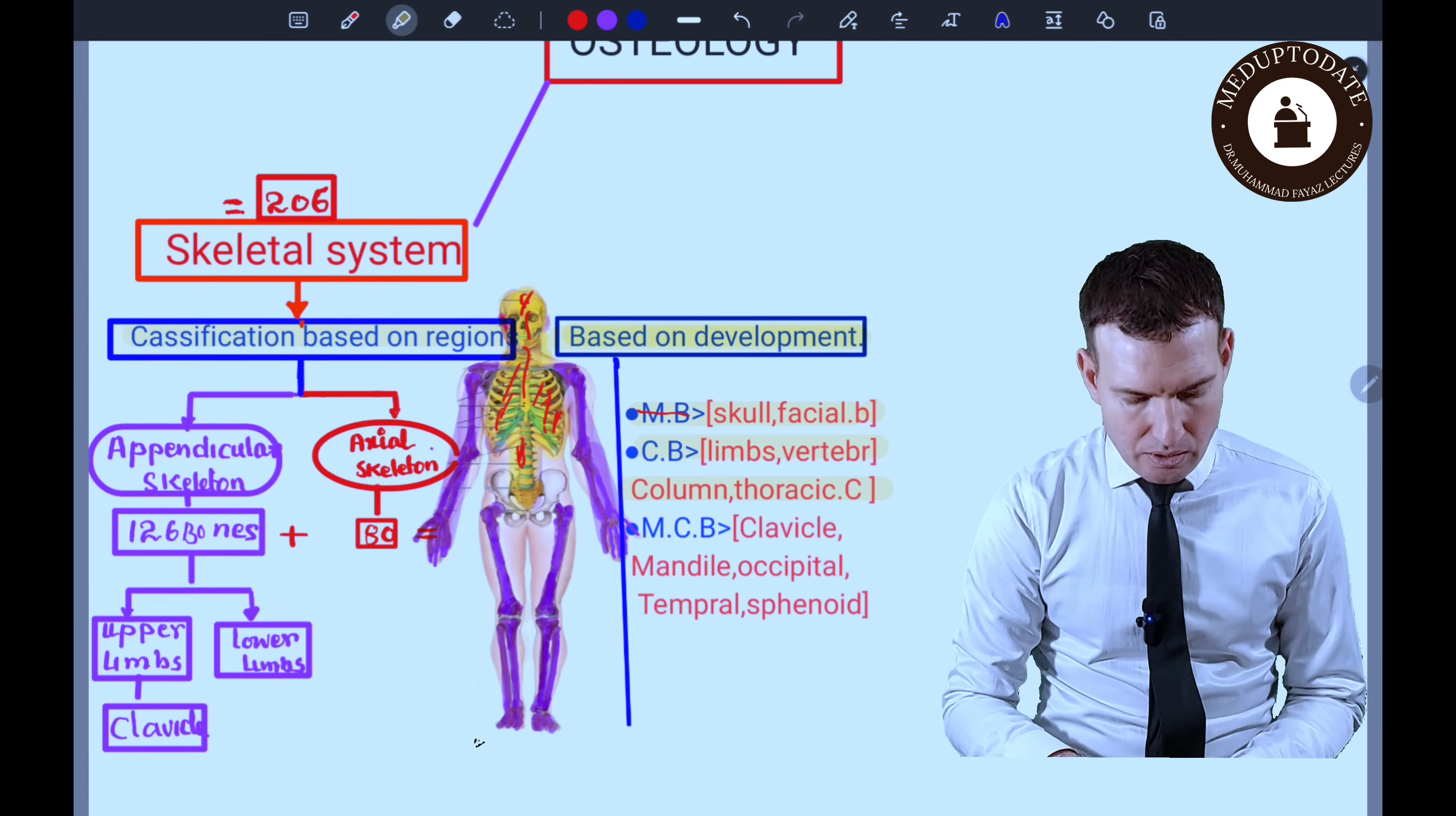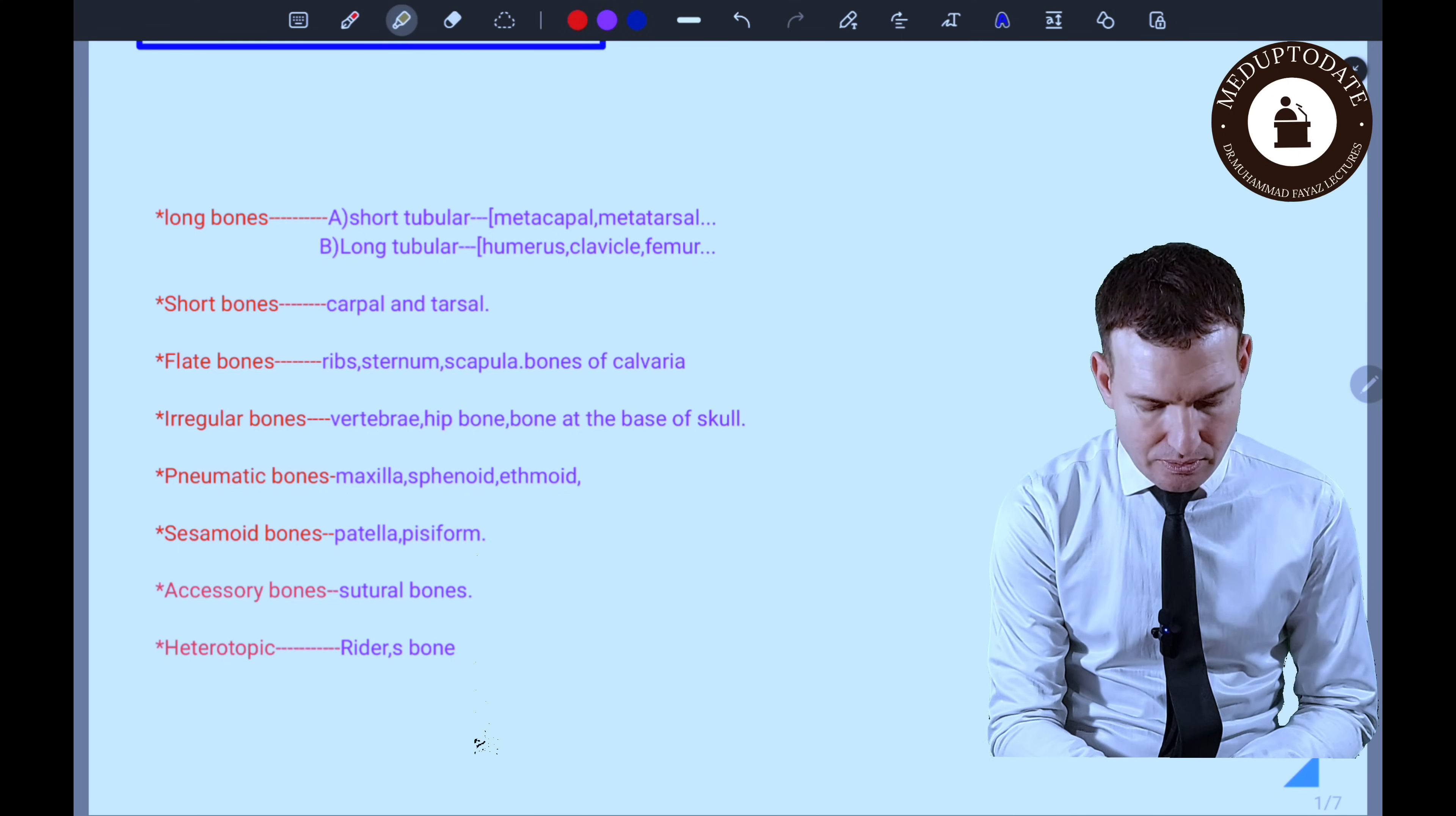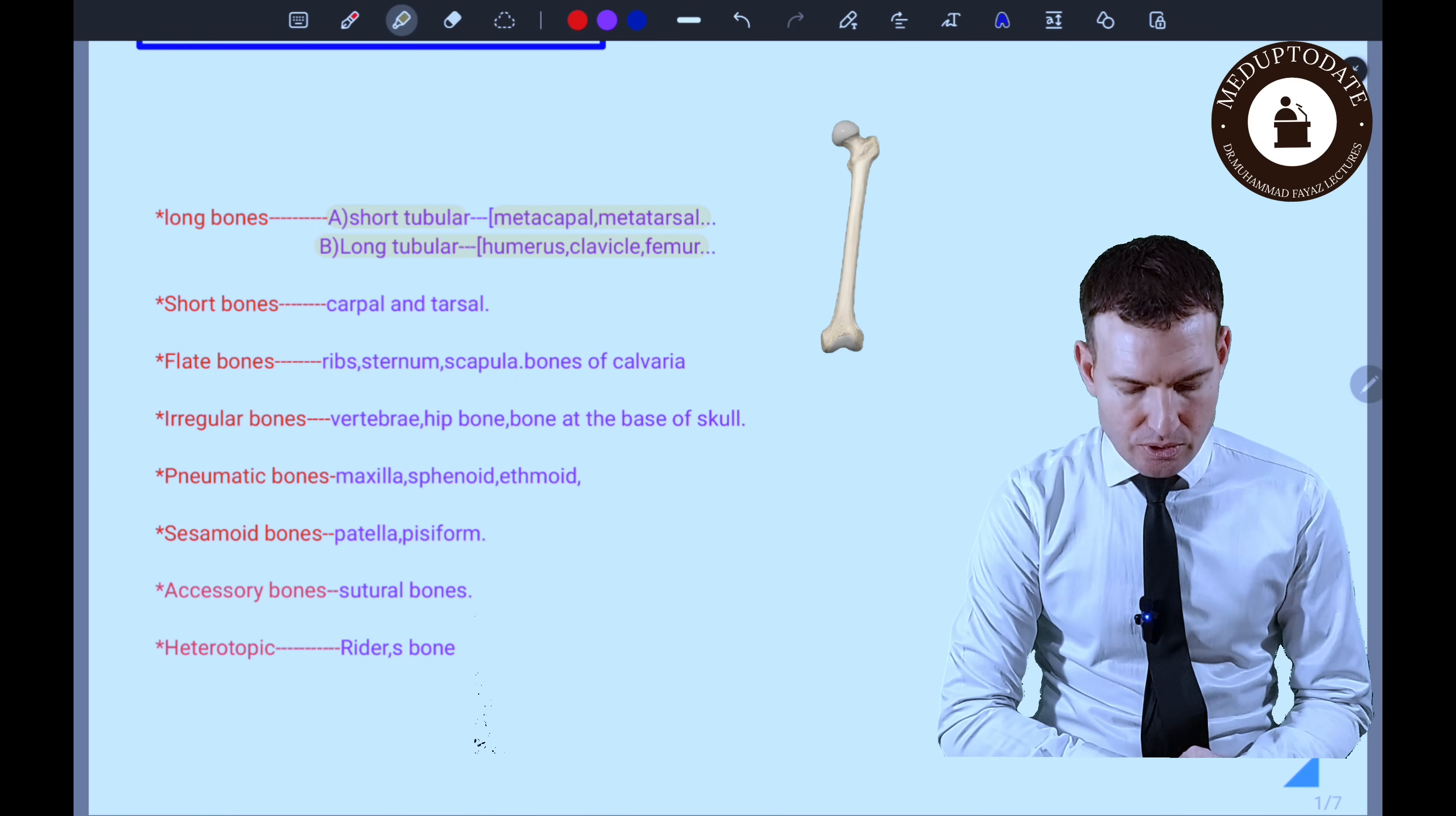Then we have the next classification of bone that is based on the shape and some other characteristics too. Based on this classification we have long bones, and then long bones are further classified into two groups: short tubular bones—it includes metacarpal bones and metatarsal bones—and long tubular bones, an example of such bone is the humerus.